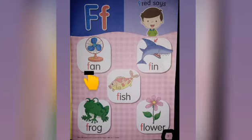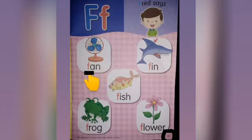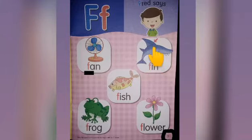Now let's read. Finger point, ready, point. Children, what picture is this? This is a picture of a shark. Look at the arrow — they are pointing to the shark's fin. Let's read together.